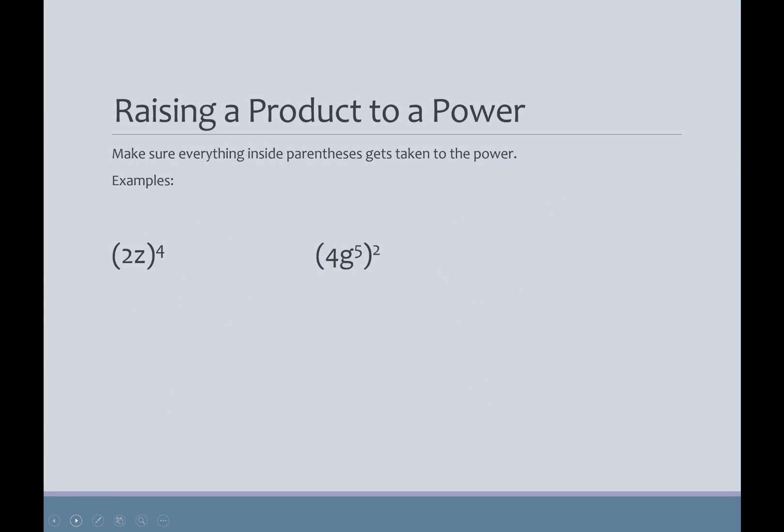Alright. Now, this is different from when we just did because now I've got numbers inside of there. So, everything inside of here is going to be taken to the fourth power. So, two to the fourth power Z to the fourth power. So, two to the fourth power is sixteen because it's two times two, which is four times another two, which is eight times another two, which is sixteen Z to the fourth. So, this is sixteen Z to the fourth.